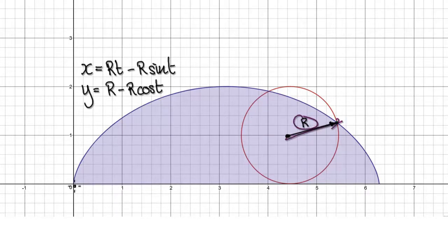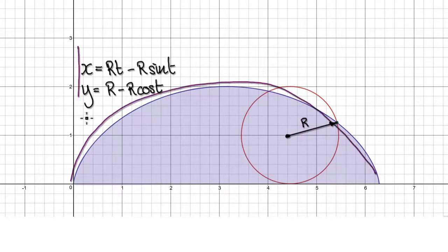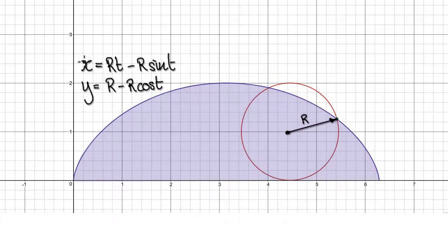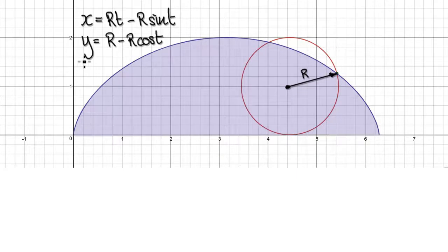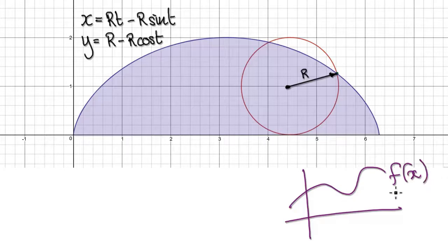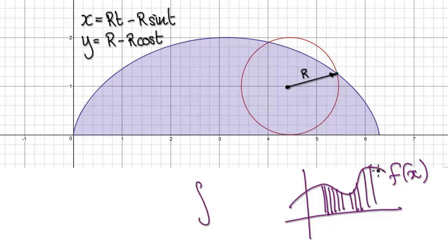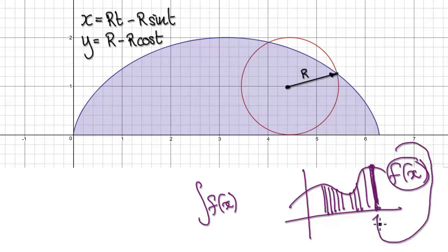We've also seen that the parametric equations for the cycloid are given by this. To integrate a normal function — say f of x — to work out the area underneath f of x, we need to sum up all the heights. The height is given by the function itself. And then we multiply by the thickness, where the thickness here is dx.